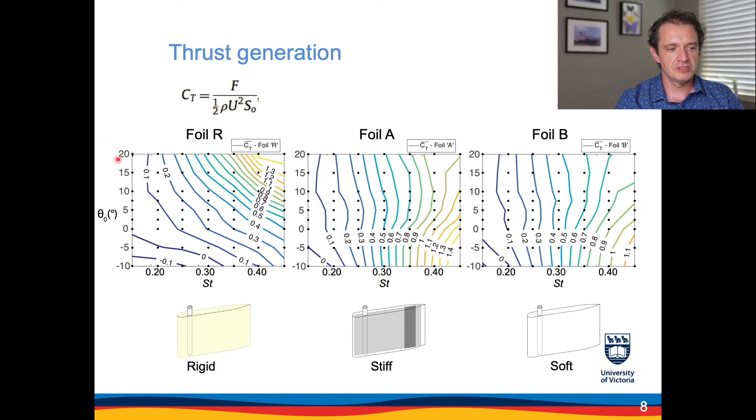the stiff and the soft foil as a function of the pitch amplitude and the Strouhal number. The contours show the values of the generated thrust. You can see that for all foils the thrust monotonically increased with the Strouhal number which is an expected result. However the high values of thrust were observed at or rather were achieved at relatively high values of the pitching amplitude for the rigid foil,